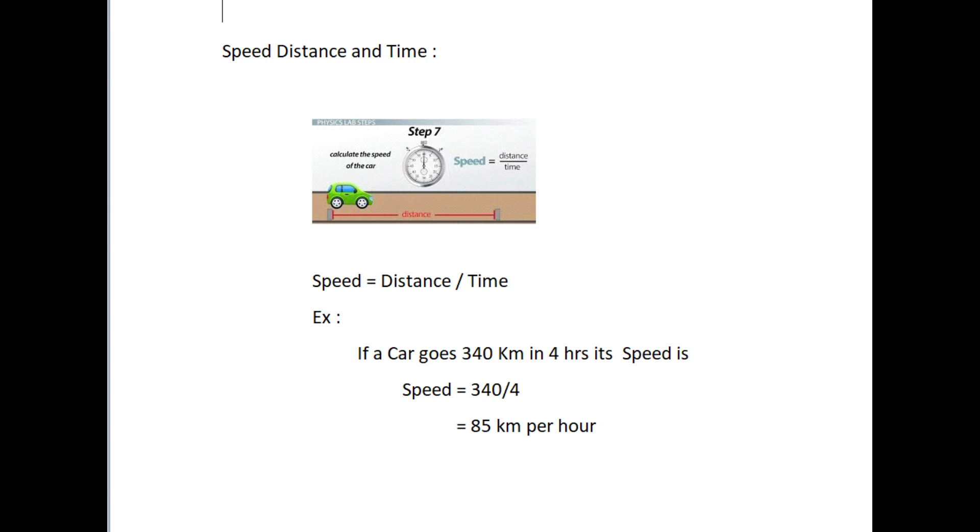For example, if a car goes 340 kilometers in 4 hours, its speed is 340 divided by 4, which equals 85 kilometers per hour.